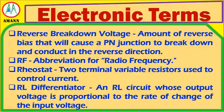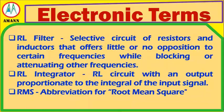Reverse Breakdown Voltage: an amount of reverse bias that will cause a P-N junction to break down and conduct in the reverse direction. RF: an abbreviation for radio frequency. Rheostat: a two-terminal variable resistor used to control current. RL Differentiator: an RL circuit whose output voltage is proportional to the rate of change of the input voltage. RL Filter: a selective circuit of resistors and inductors that offers little or no opposition to certain frequencies while blocking or attenuating other frequencies. RL Integrator: an RL circuit with an output proportionate to the integral of the input signal. RMS: an abbreviation for root mean square.